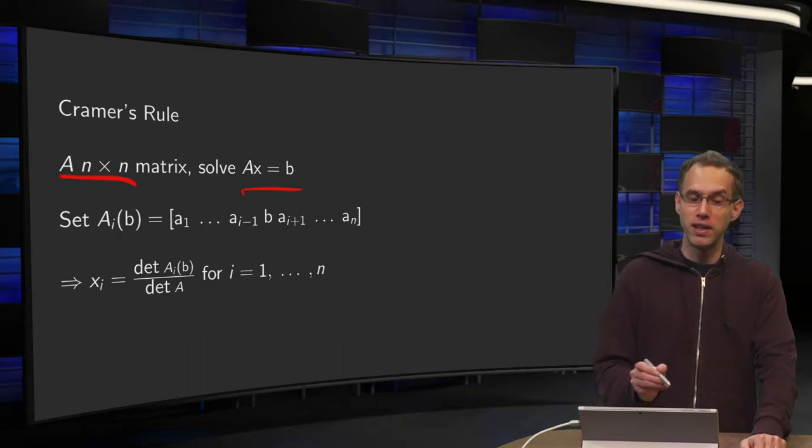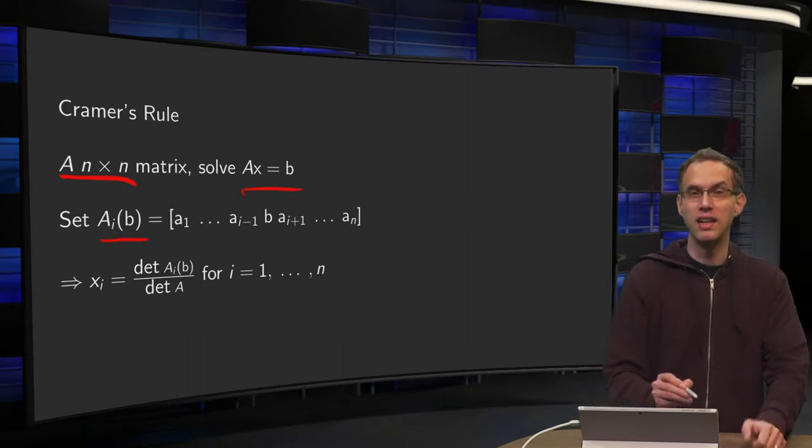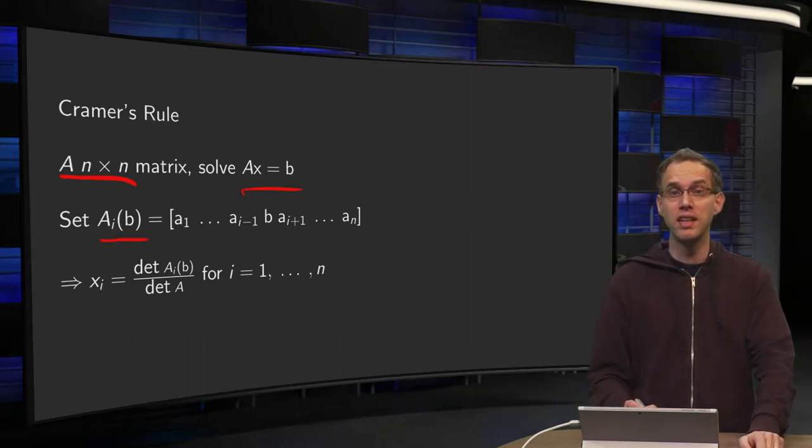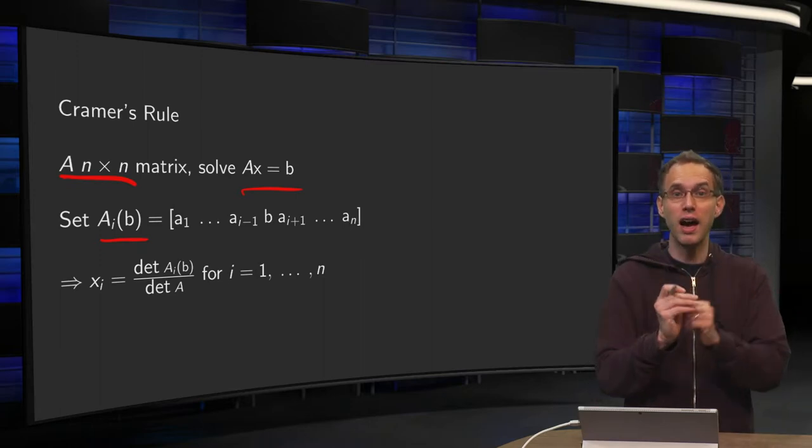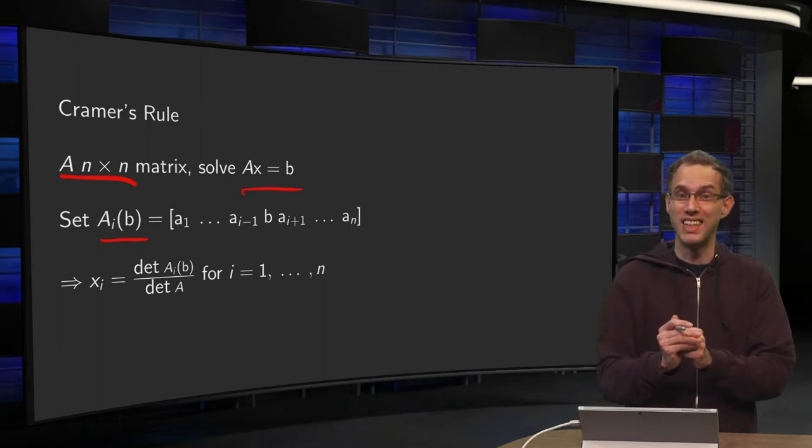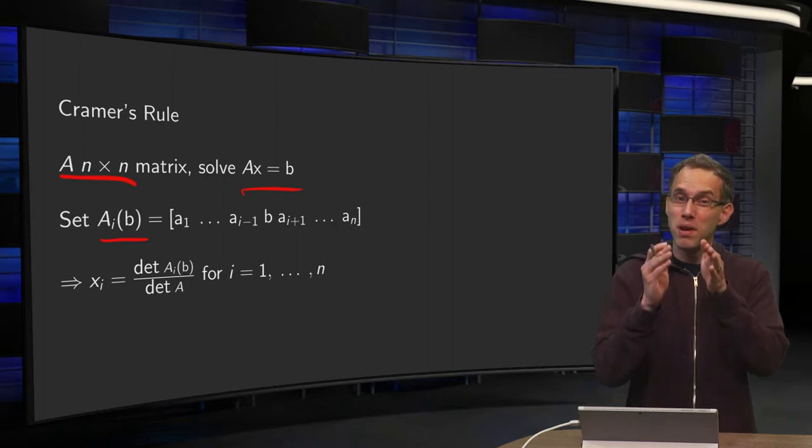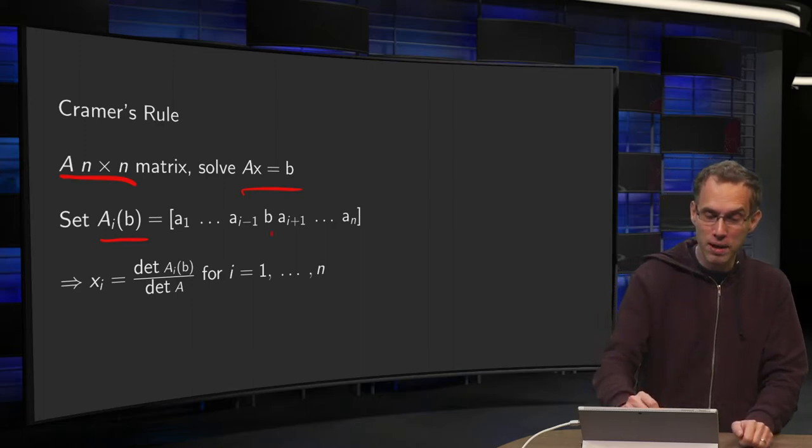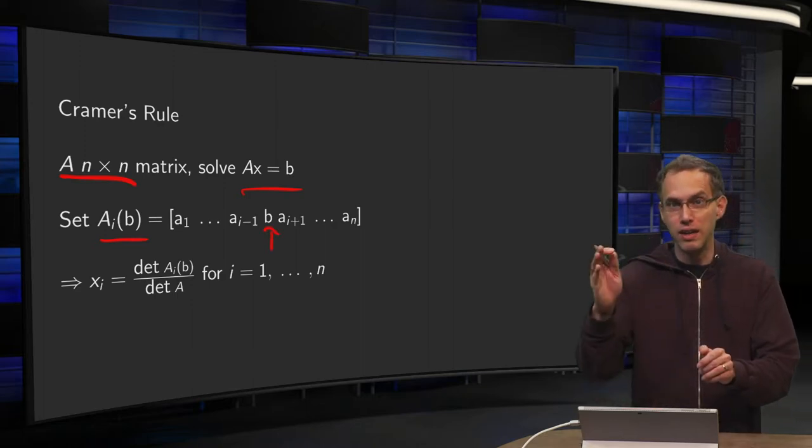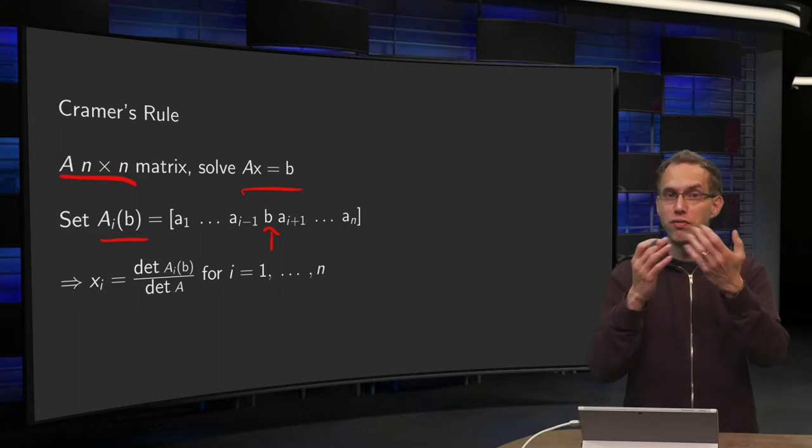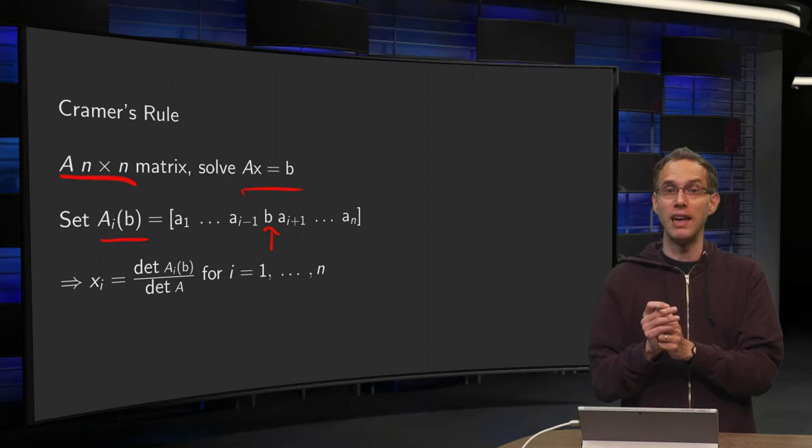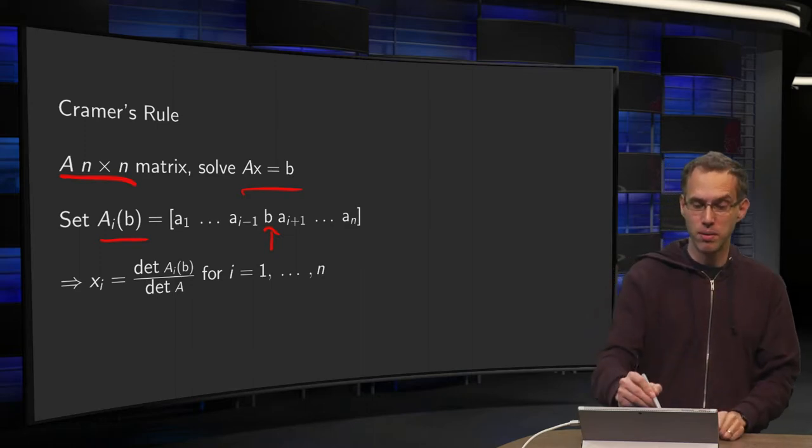What is the situation? We have an n by n matrix A and we want to solve Ax = b. Then first we form the matrix A_i(b). How do we do that? We keep the first i minus one columns of A the same, and then we replace the ith column by b, and leave the rest the same. So it is easy to form this matrix, just replace one of the columns of A by your unknown vector b.